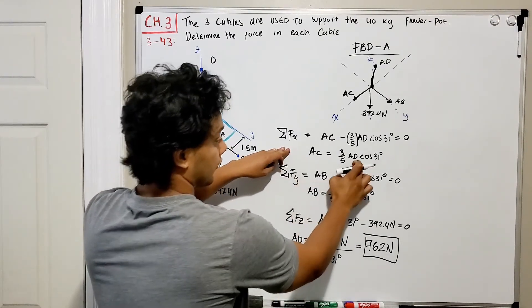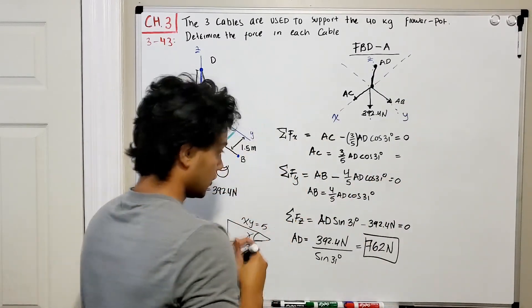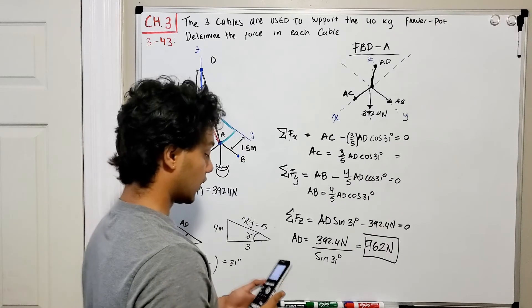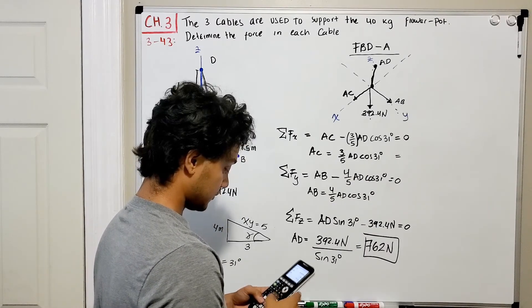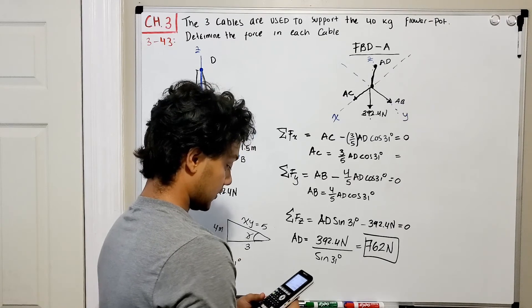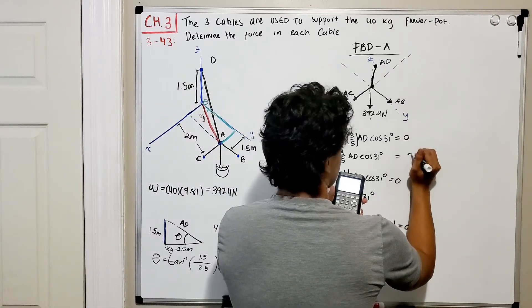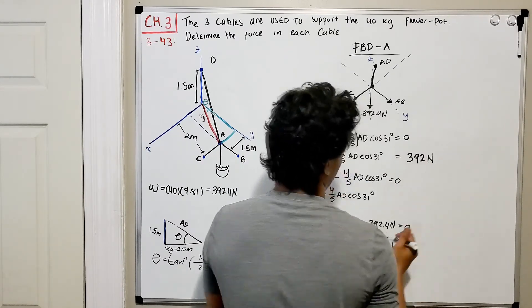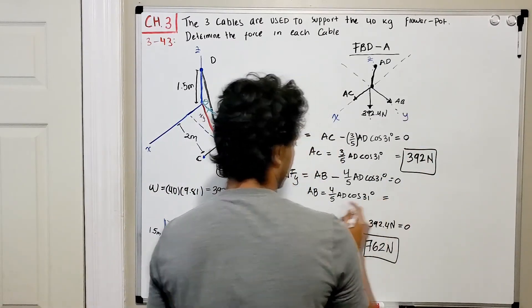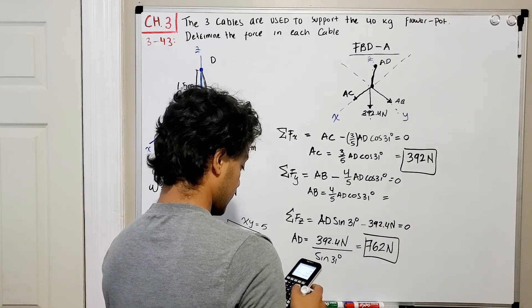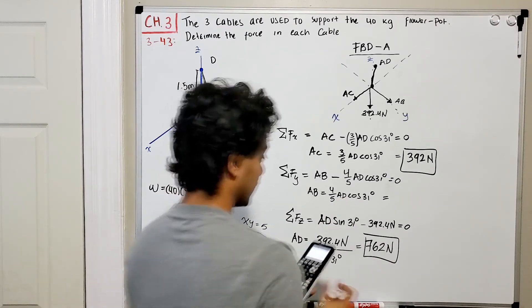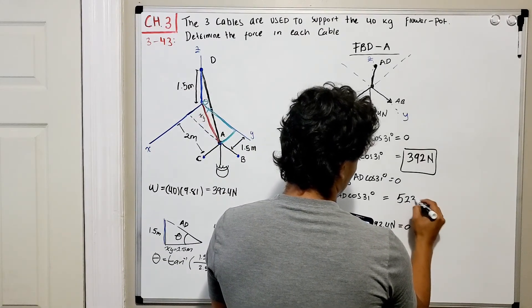Now we can find AC: (3/5) × 762 × cos(31°) = 392 Newtons. And cable AB: (4/5) × 762 × cos(31°) = 523 Newtons.